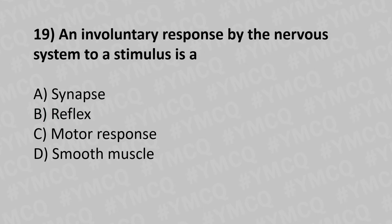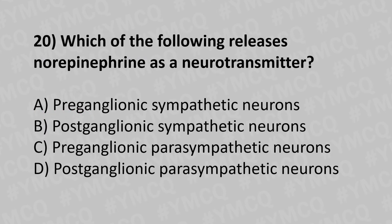Moving to our nineteenth question. An involuntary response by the nervous system to a stimulus is a: Option A: synapse. Option B: reflex. Option C: motor response. Option D: smooth muscle. And the answer is option B: reflex.